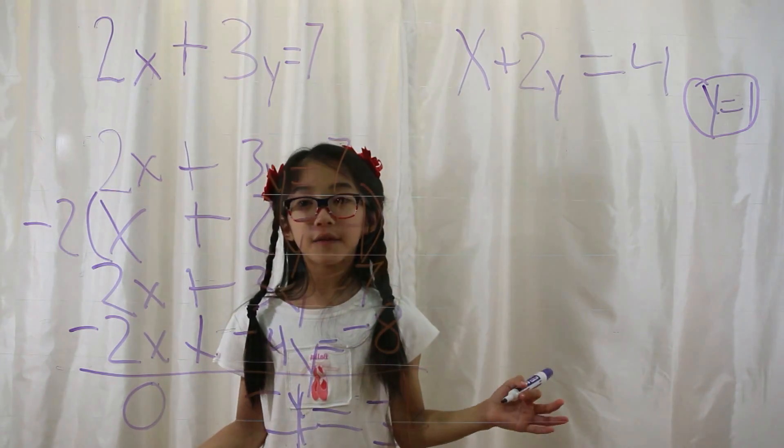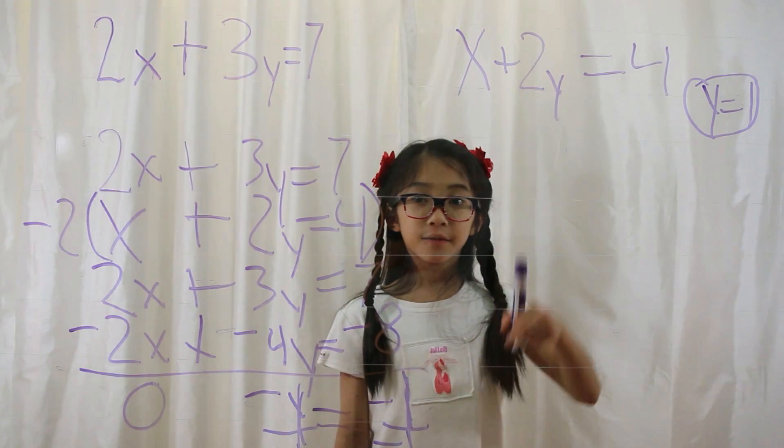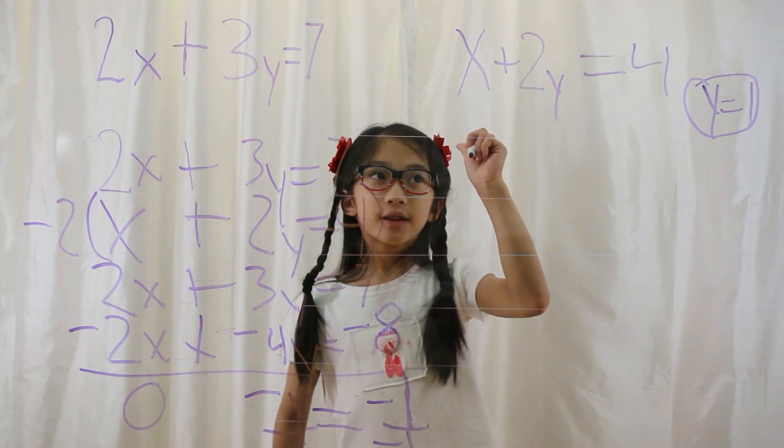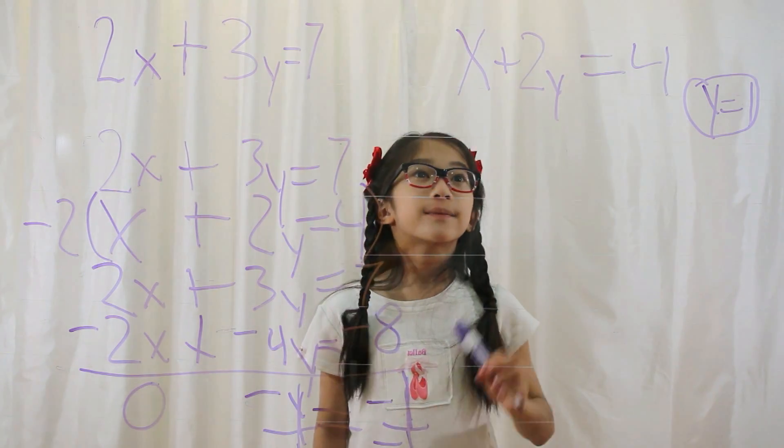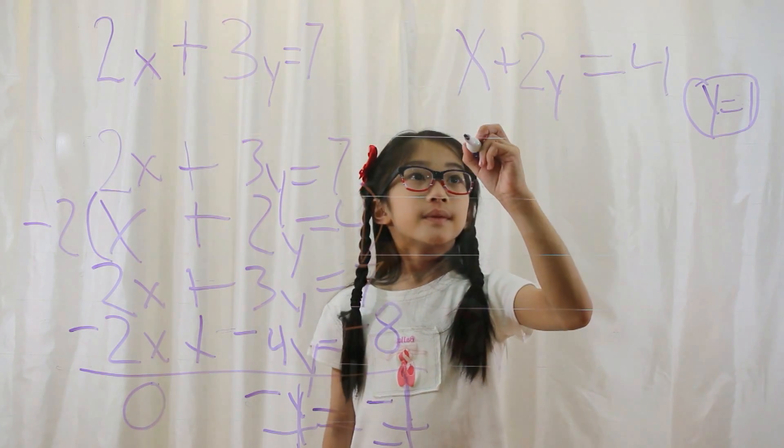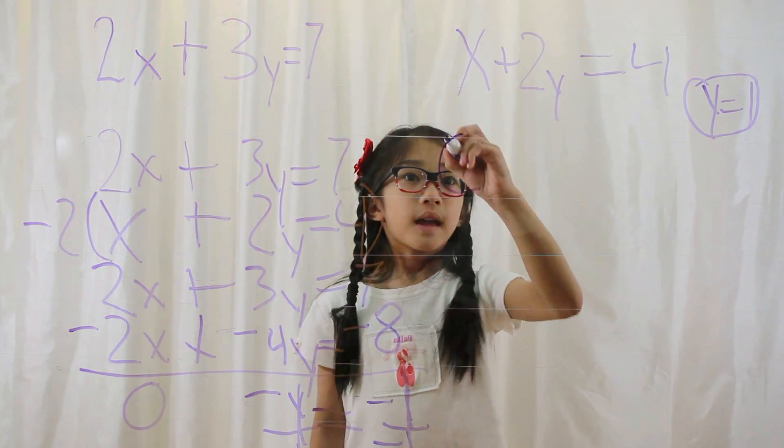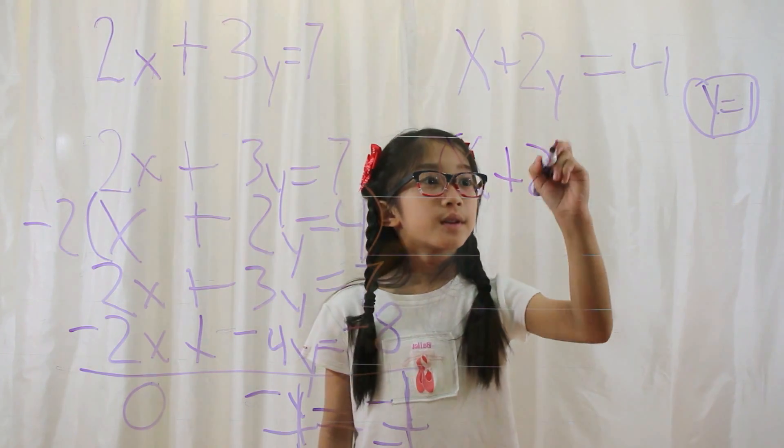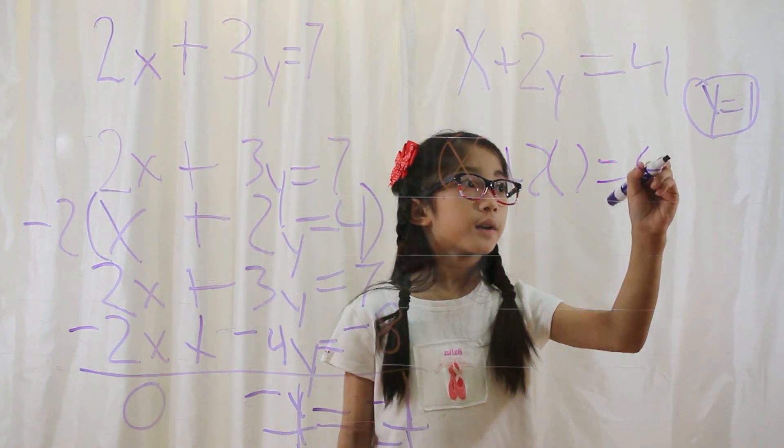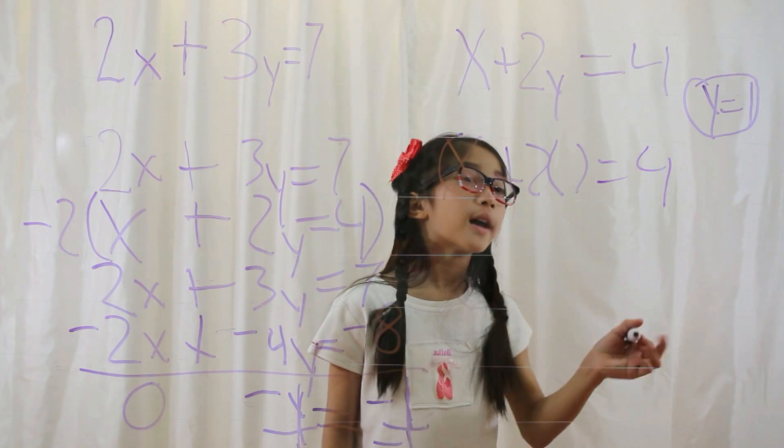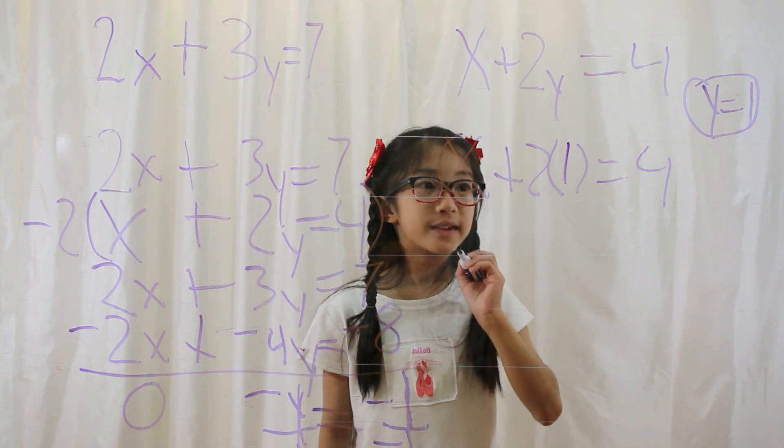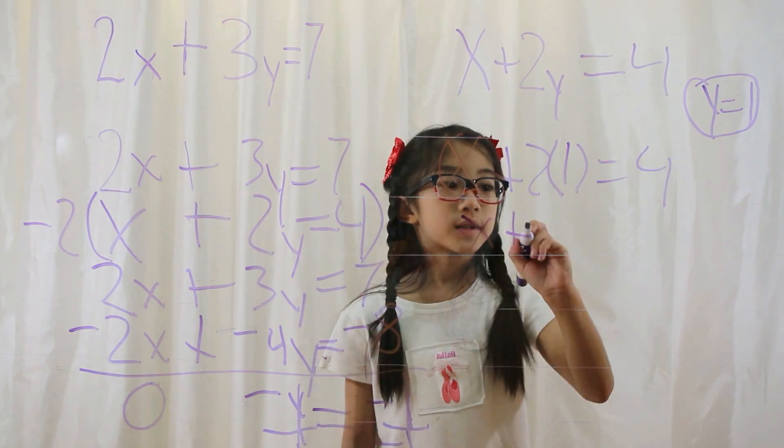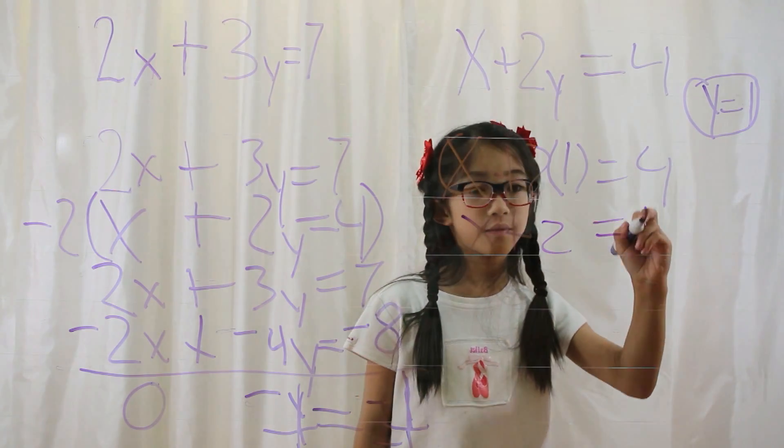Now you solve for your other variable by plugging your first variable into the equation. I'm going to use this equation. It really doesn't matter. So, x plus 2 times 1, which is 2, equals 4. Since y is equal to 1, I'll put the 1 in the y parentheses. So x plus 2 times 1, which is 2, equals 4.